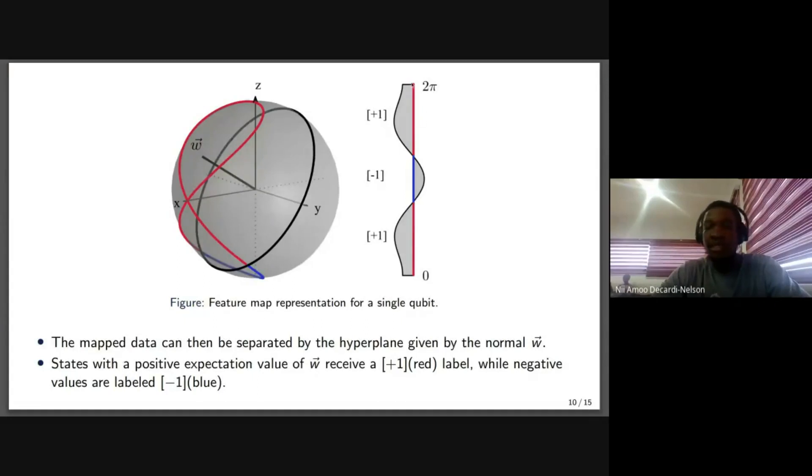So for instance, if you look at the diagram to the right, you'd have the two classes. So anything that is above the hyperplane, you'd put it in a positive class. Anything below the hyperplane, you'd put it in a negative class.